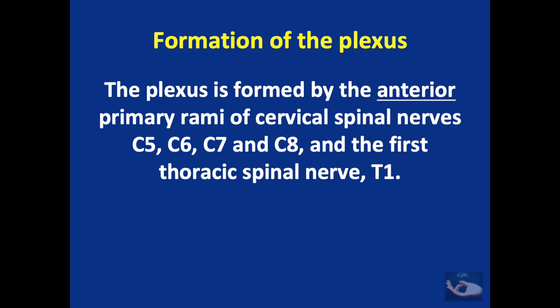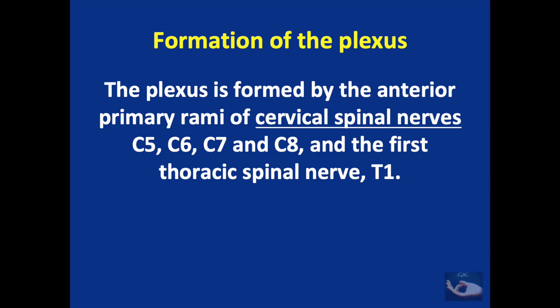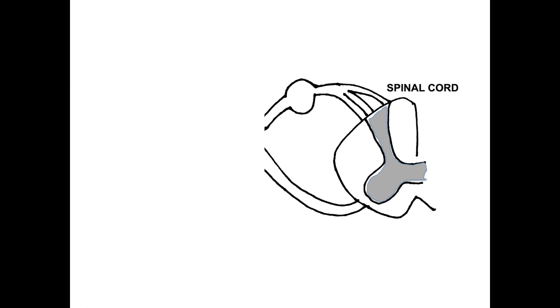The plexus is formed by the anterior primary rami of cervical spinal nerves C5, C6, C7, C8, and the first thoracic spinal nerve T1. A spinal nerve is formed by two main components: the ventral root and the dorsal root. The ventral root arises from the anterior horn of the spinal cord and consists mainly of motor fibers that ultimately end in the skeletal muscles.